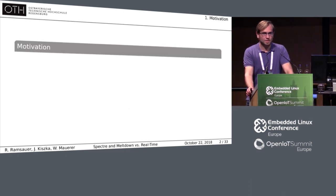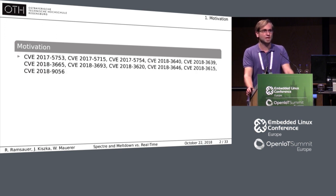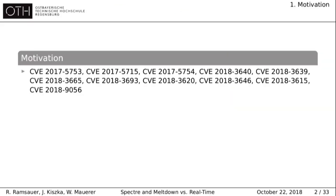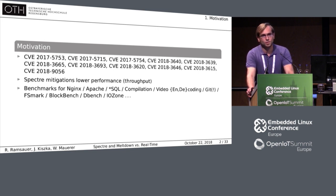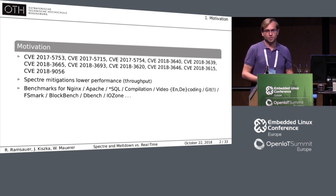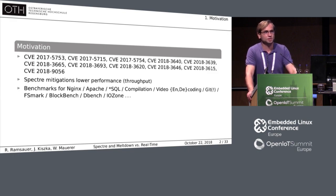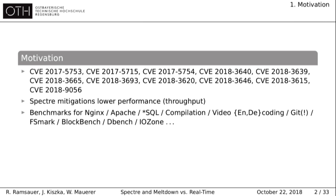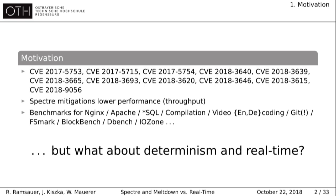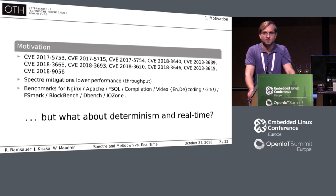So why are we doing all this? In the beginning of this year, people started to speculate on speculative execution of CPUs, and that literally hits the cores of our systems. There were many CPU bugs disclosed since then. There are already many benchmarks out there investigating the effect of those mitigations for desktop systems, data center appliances, web servers like NGINX and Apache, database servers, compilation, video decoding, and Git. But to the best of our knowledge, none of them focused on the effect of those mitigations on real-time systems where determinism and low latencies matter.